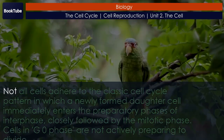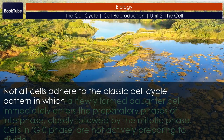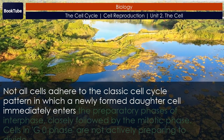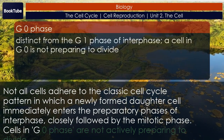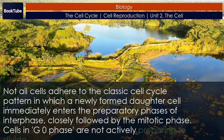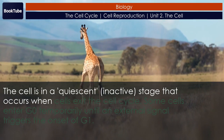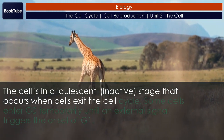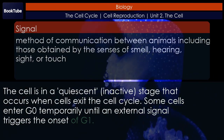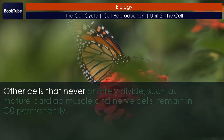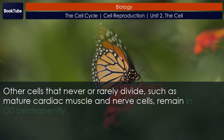G0 Phase. Not all cells adhere to the classic cell cycle pattern in which a newly formed daughter cell immediately enters the preparatory phases of interphase, closely followed by the mitotic phase. Cells in G0 phase are not actively preparing to divide; the cell is in a quiescent, inactive stage that occurs when cells exit the cell cycle. Some cells enter G0 temporarily until an external signal triggers the onset of G1. Other cells that never or rarely divide, such as mature cardiac muscle and nerve cells, remain in G0 permanently.